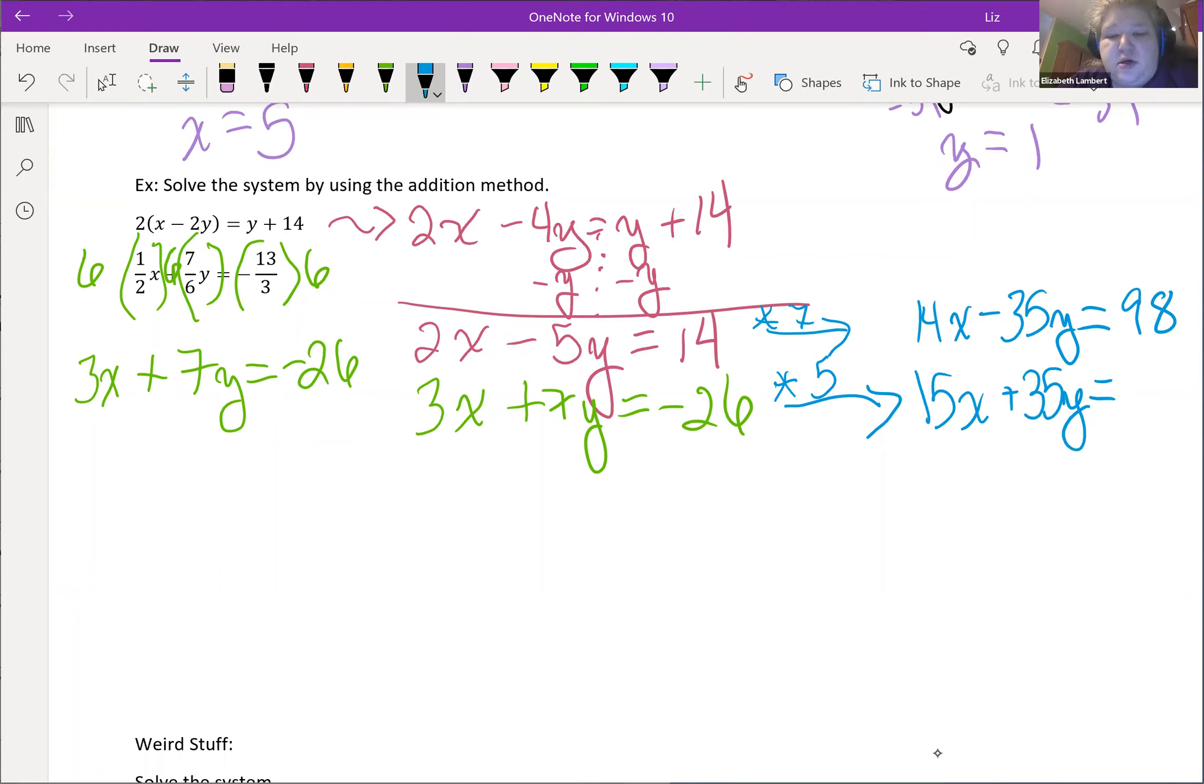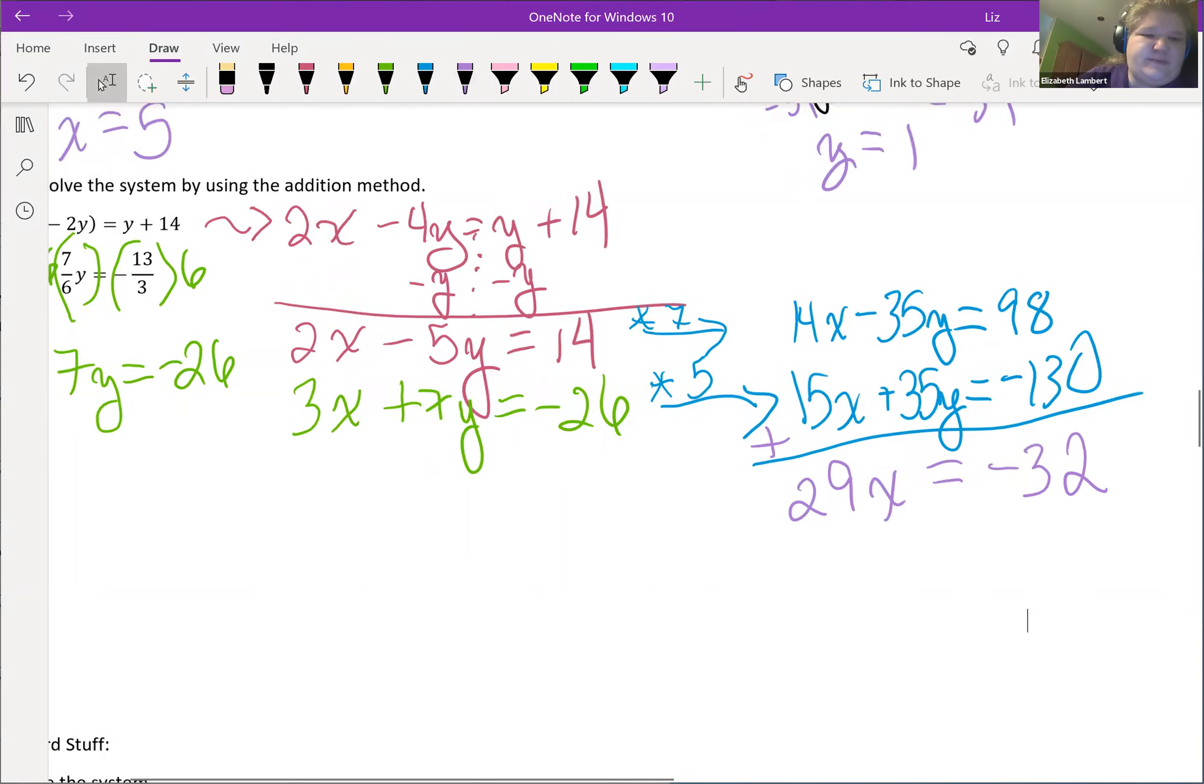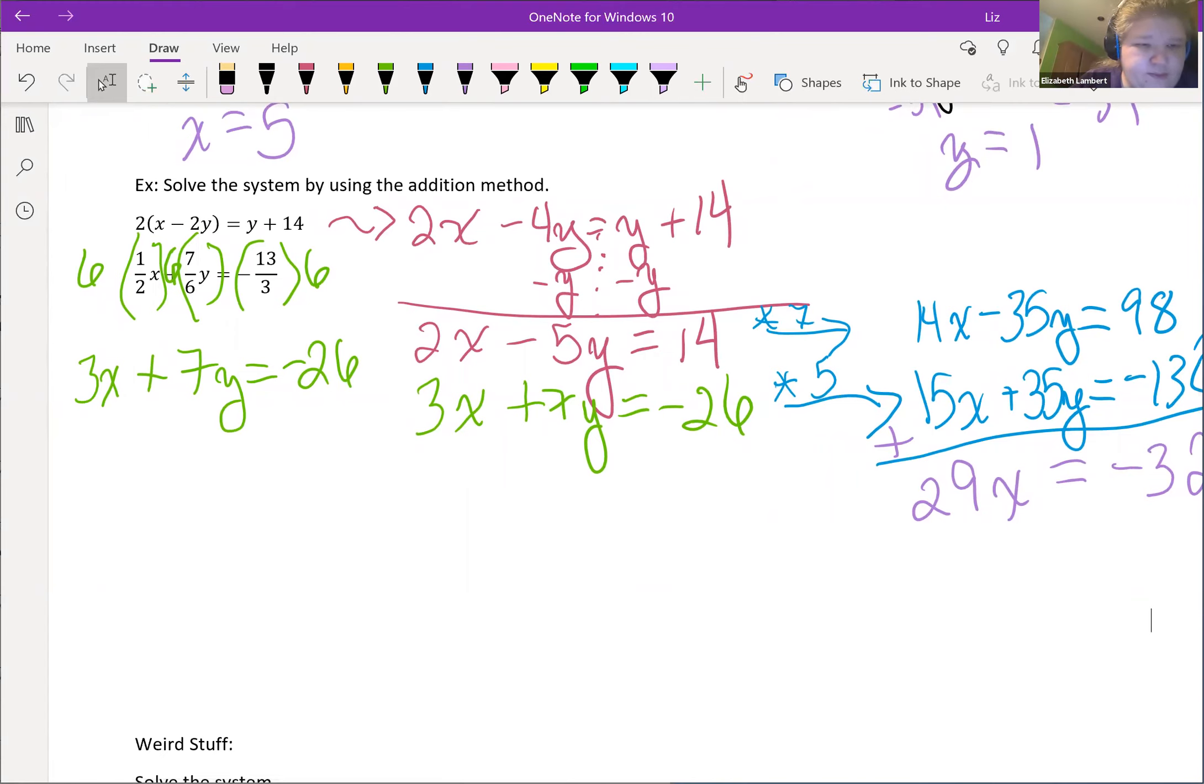And then five times negative 26, well it's definitely negative. That's five times 20 is 100, five times 6 is 30, so 130. Now we add. That is 29x's. Then over here equals 98 minus 130, so there's 30 and two more, getting negative 32. And I'm not liking it because negative 32 over 29 is hideous. Well it's not impossible for us to get a fraction answer, it's just rare.